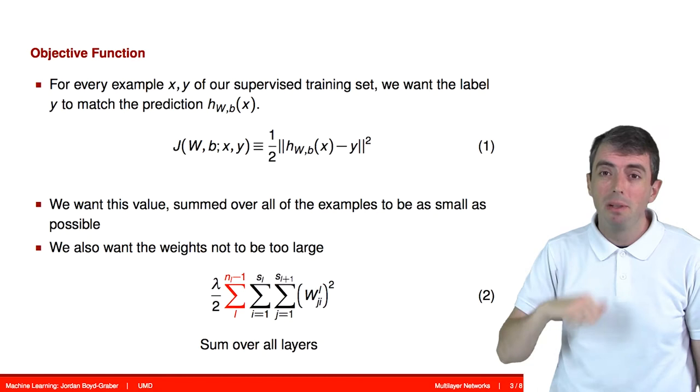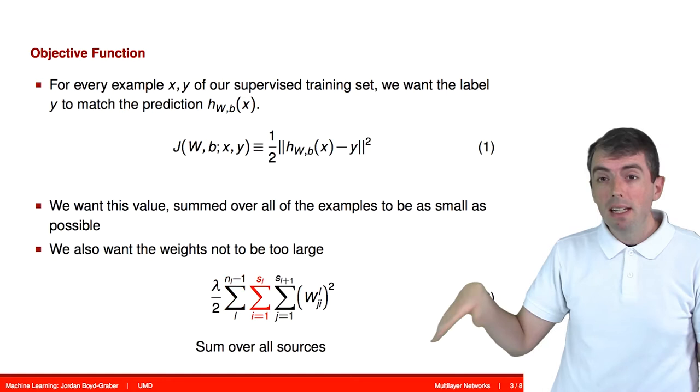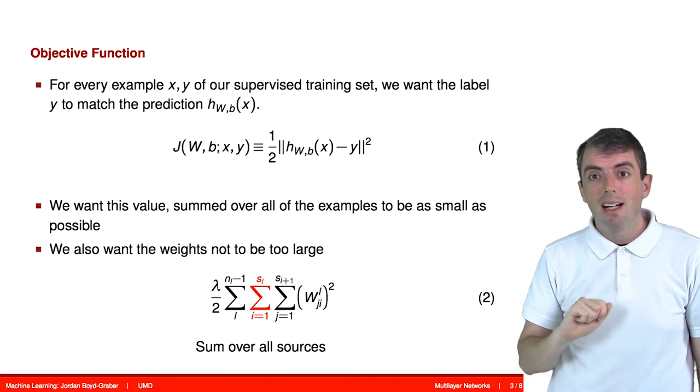For each layer, you can have many different sources, basically all of the previous nodes in the preceding layer. So you have to sum over all of those sources. Those each have their own weight.